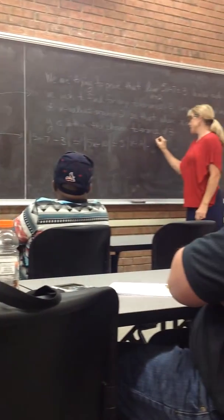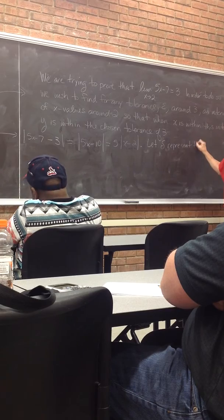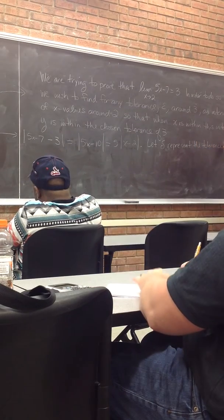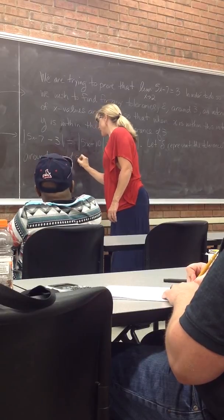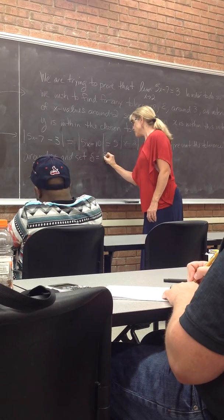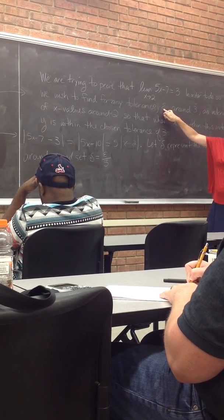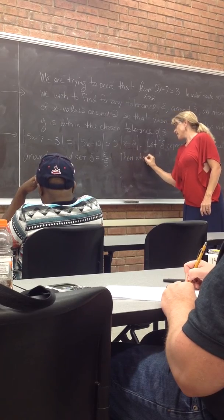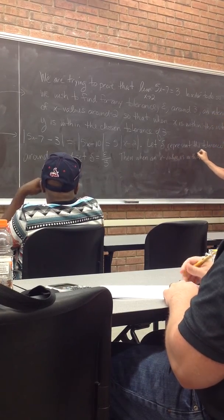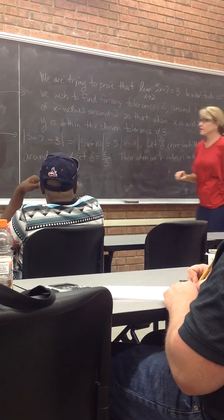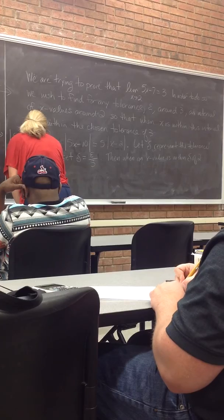Once I factor out the x minus 2, then let delta represent the tolerance around x. And set delta equal to epsilon divided by 5. Remember epsilon is my tolerance in the y direction. Then when an x value is within delta of 2, x minus 2 will be less than epsilon over 5.